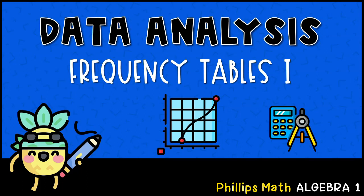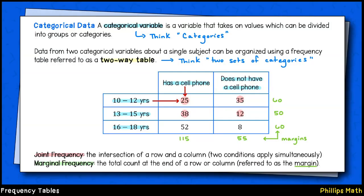The type of data we are organizing into these tables are referred to as categorical data. When you hear this, think categories. Since this is a two-way table, all of our data can fit into exactly two categories, one on each side of the table.